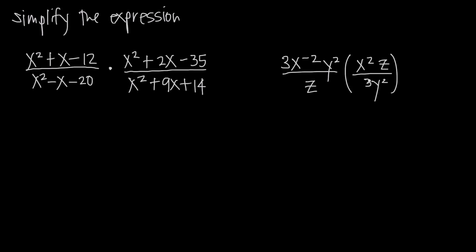So how do we multiply rational expressions? The simplest explanation is you just multiply the numerators together to get the new numerator, and you multiply the denominators together to get the new denominator. It's really as simple as that. However, whenever you're multiplying rational expressions, instead of just right off the bat multiplying through the numerators and denominators, you might want to look to see if you can cancel anything from the numerators and denominators.